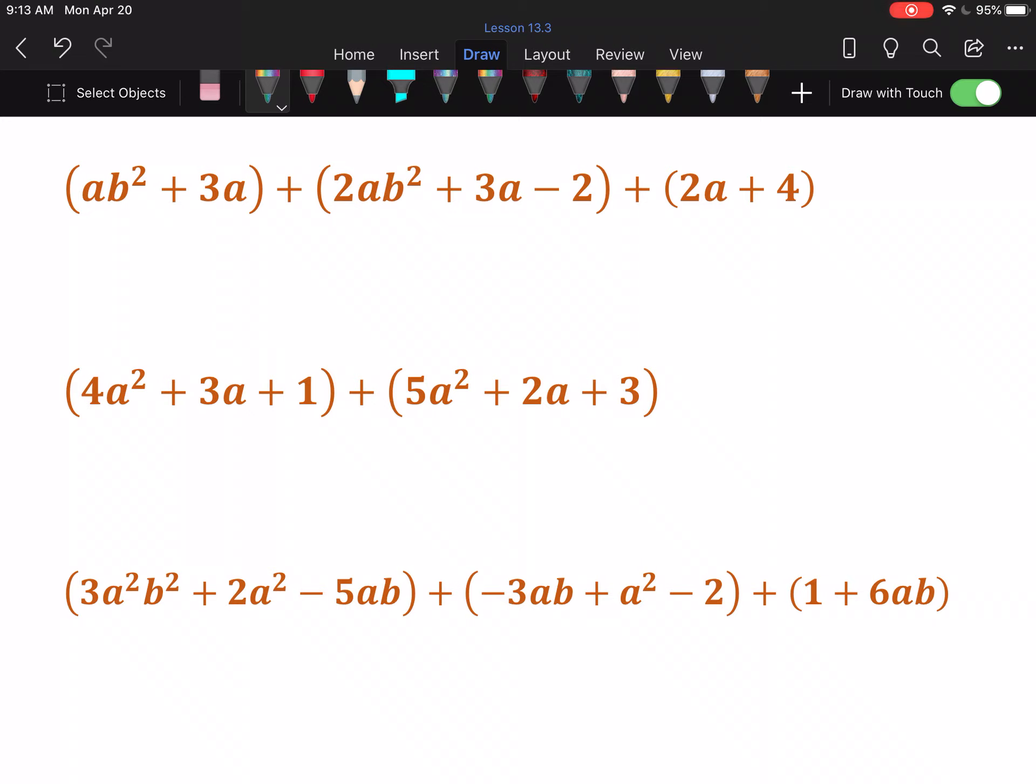Starting with the ab squareds. There's one ab² in the first set of parentheses. There are 2ab² because it says 2ab² in the second set. So that is combined 3ab².